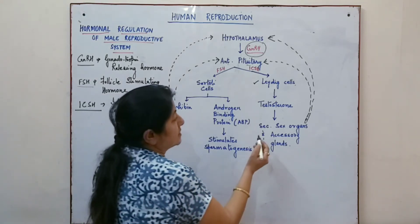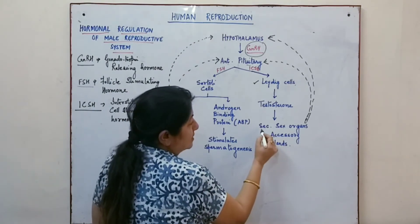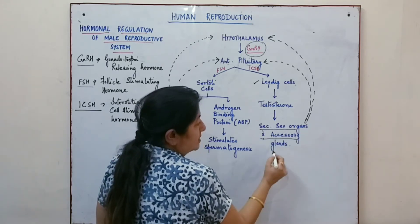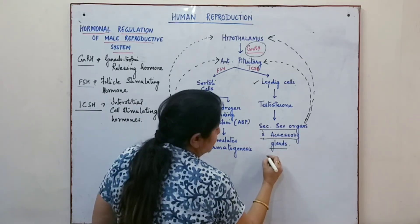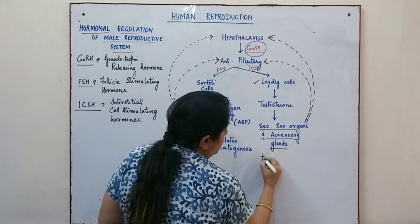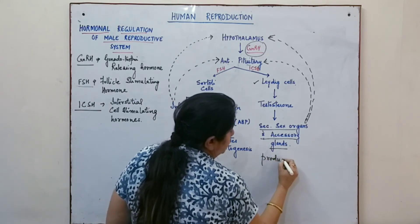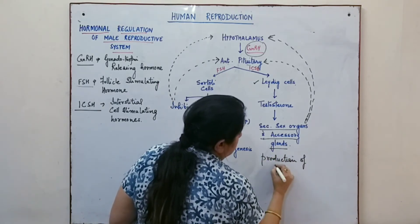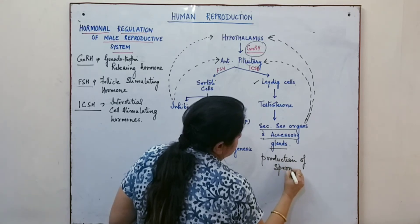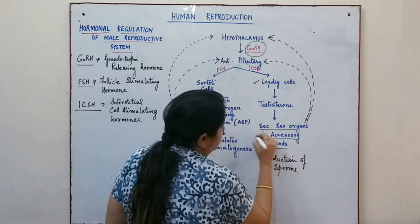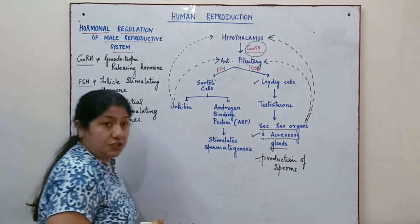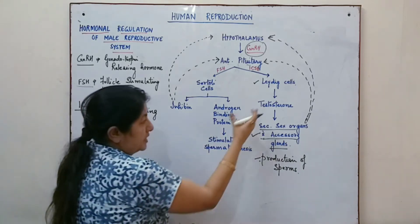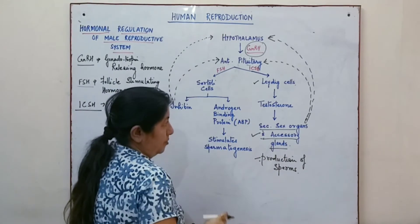Testosterone is also responsible for the development of the secondary sex organs and accessory glands, as well as for the production of sperm. These two major functions are performed by testosterone, which is the major androgen.